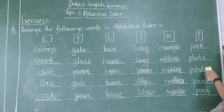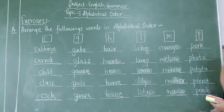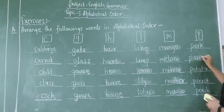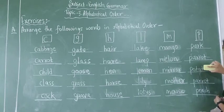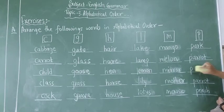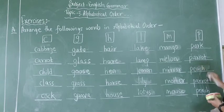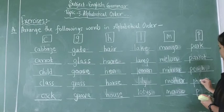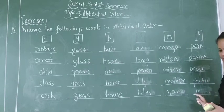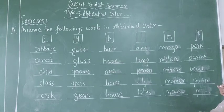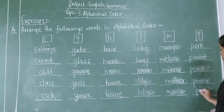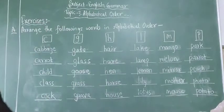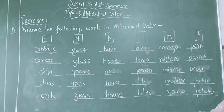And last letter, letter P. P ke baad aana chalye A. So park is here. Then second P-A-R-R-O-T parrot. Then another P-E-A-C-H peach. Then another P-H-O-T-O photo. And last P-O-T-A-T-O potato. We have arranged in alphabetical orders.